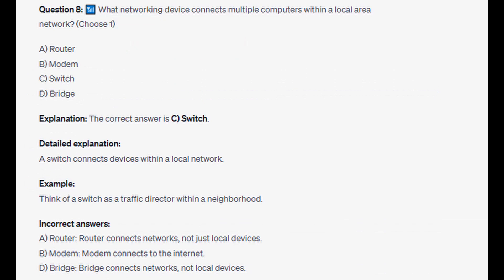And the correct answer is C: A switch. A switch connects devices within a local network. Think of a switch as a traffic director within a neighborhood. And for the incorrect answers: router connects networks, not just local devices. Modem connects to the internet. And bridge connects networks, not local devices.